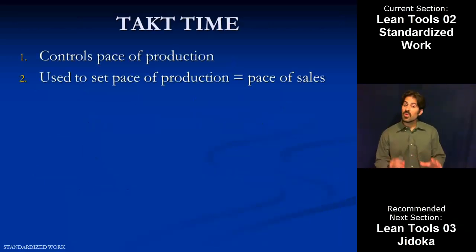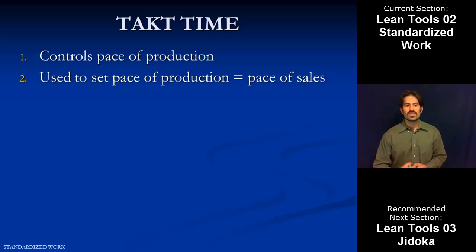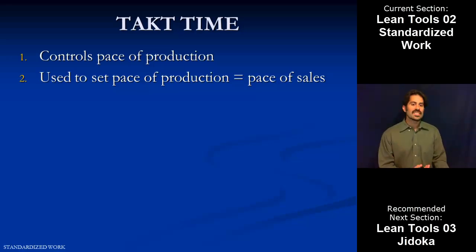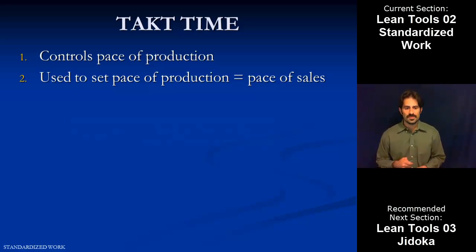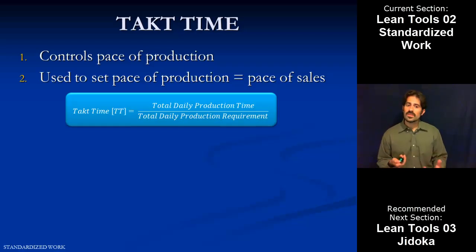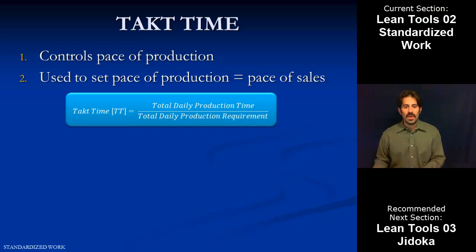Takt time is an important idea, and really what it does is it's something we use to control the pace of production. Through takt time, we can set our pace of production equal to our pace of sales, which is one of the high-level goals from the philosophy section in terms of being as efficient as possible. The takt time is equal to the total daily production time divided by the production requirement for that day.